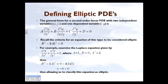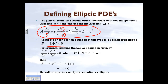Let's review how we can look at second order linear partial differential equations. The differential equation shown is a second order linear partial differential equation with two independent variables x and y and one dependent variable u. We can recall the criteria for this equation to be elliptic: b squared minus 4ac has to be less than zero.